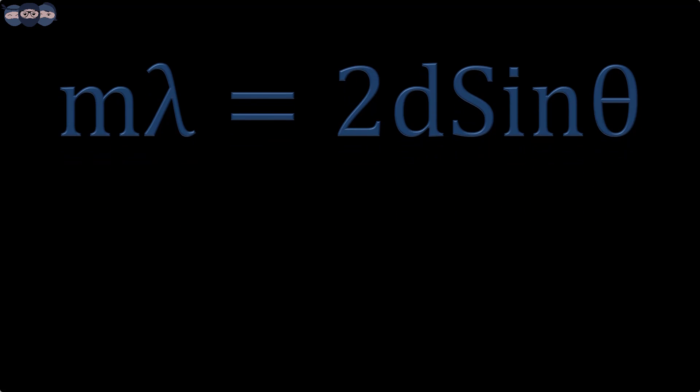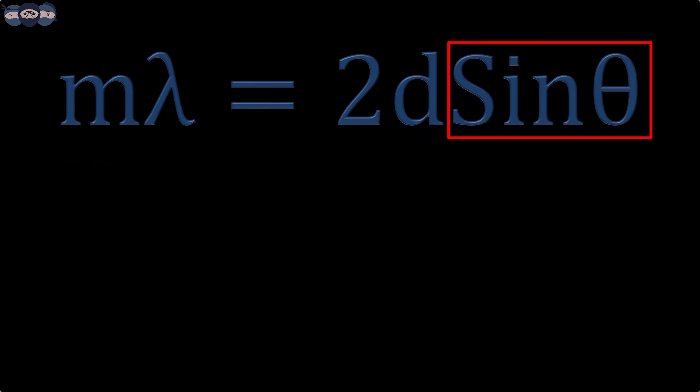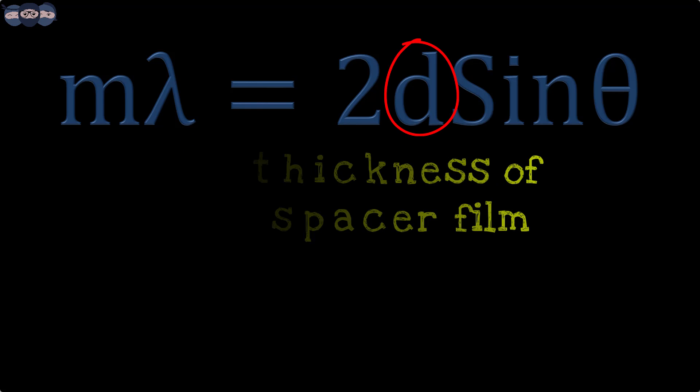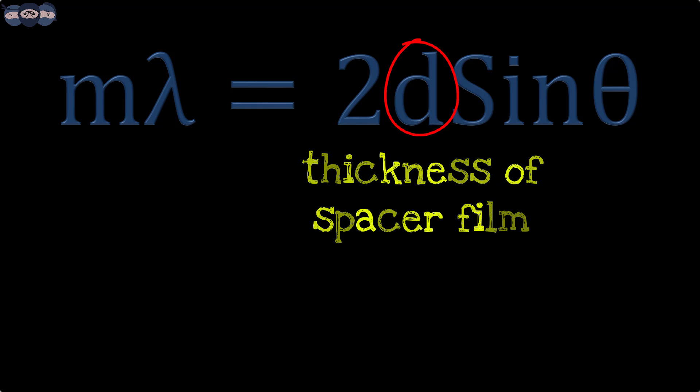The formula connecting the wavelengths that undergo constructive interference is mλ equals 2d sinθ. Here, the incident radiations are perpendicular to the surface, so sin 90 equals 1. D is the thickness of the spacer film or distance between two silver layers.